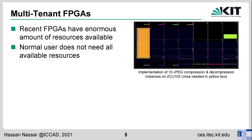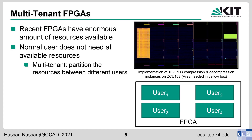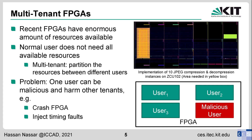Modern FPGAs have lots of resources like lookup tables and DSP blocks, and a normal user most probably doesn't need all of them. For example, this figure shows the resources needed for 10 parallel instances of JPEG compression and decompression on an UltraScale+ FPGA. The area in yellow is what is needed, and the rest of the FPGA is mainly empty. This opens the possibility of multi-tenancy: instead of giving FPGA access to a single user, it is given to multiple users, each with their own partition.